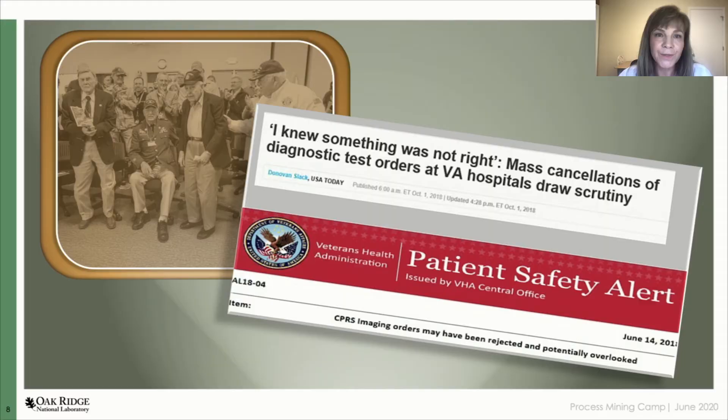An example of this: in recent years, mass cancellations of radiology orders at VA received media attention. Cancellations of more than 250,000 radiology orders at VA hospitals across the country since 2016 raised questions about whether — in a rush to clear out outdated and duplicated diagnostic orders — some facilities failed to follow correct procedures. The concern is whether some medically necessary orders for CT scans and other imaging tests were cancelled improperly.